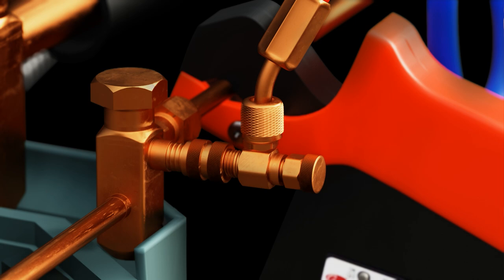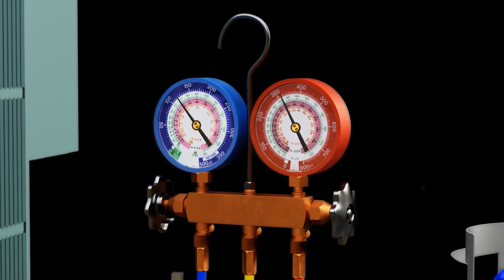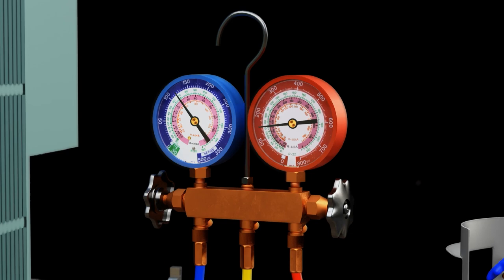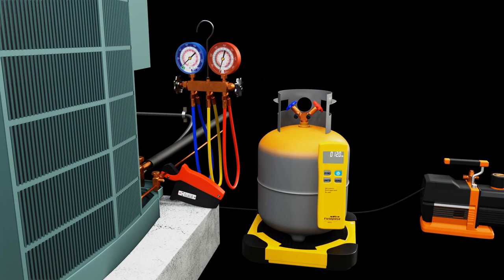So now we're safe to go ahead and disconnect everything. The first thing we do is we back out our core depressor. And then we feed that refrigerant that's in the gauges and hoses back into the suction side so that we don't waste that refrigerant. Shouldn't be a significant amount of refrigerant, but we just don't want to waste it. Then we can safely disassemble everything.